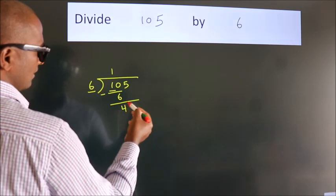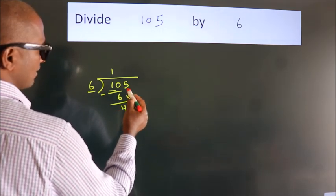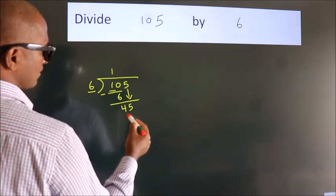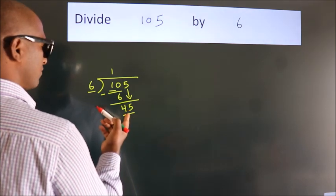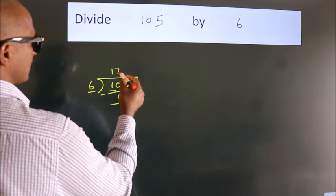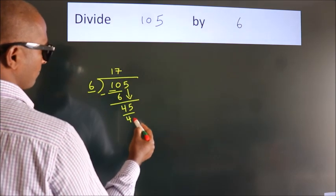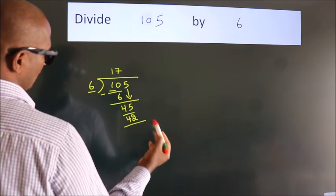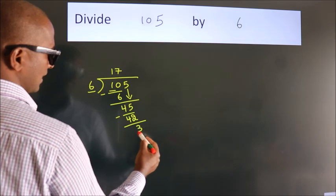After this, bring down the beside number. So 5 down, giving us 45. A number close to 45 in the 6 table is 6 times 7, which is 42. Now we subtract. We get 3.